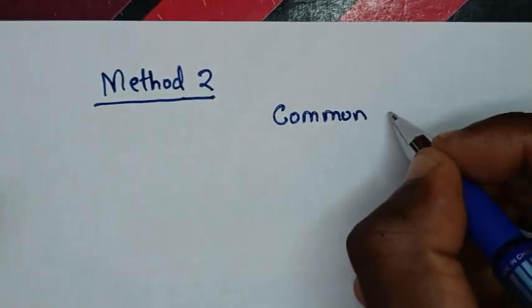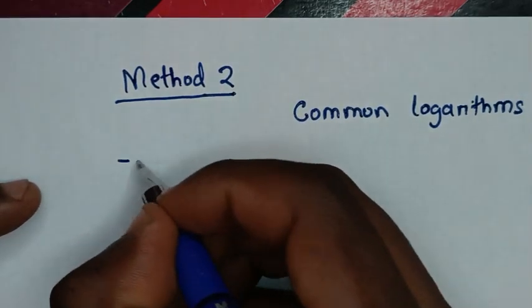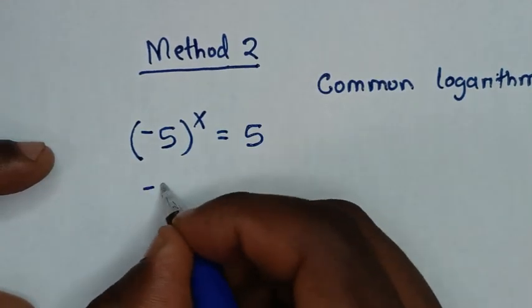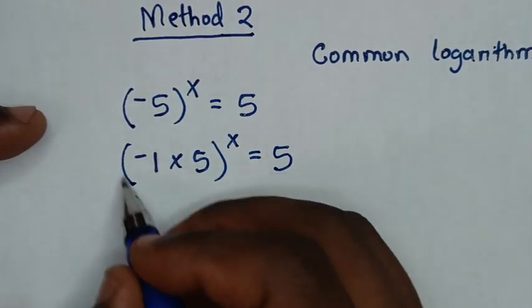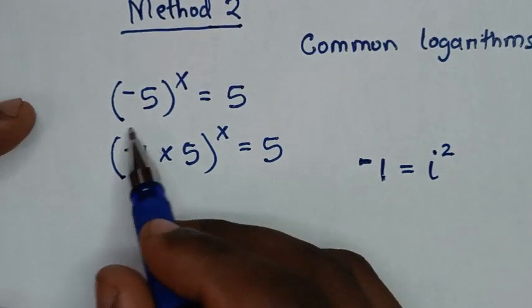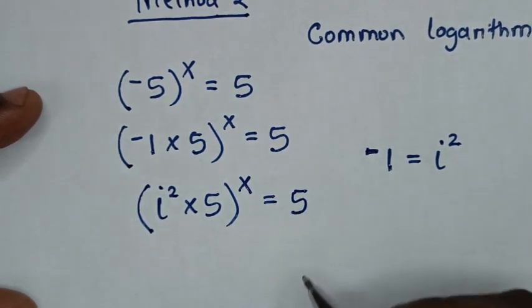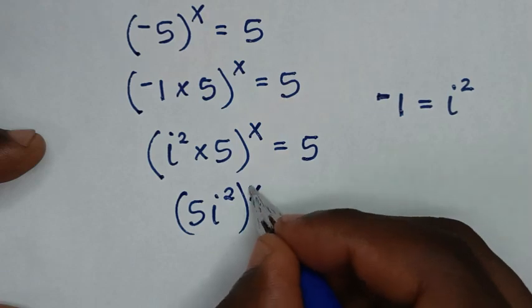In the second method — Method 2 — we'll use common logarithms. From our problem, negative 5 bracket raised to power x is equal to 5. Negative 5 is the same as negative 1 times 5. Now negative 1 equals i squared, so substituting gives i squared times 5, bracket raised to power x, equals 5 — that is, 5i squared bracket raised to power x equals 5.